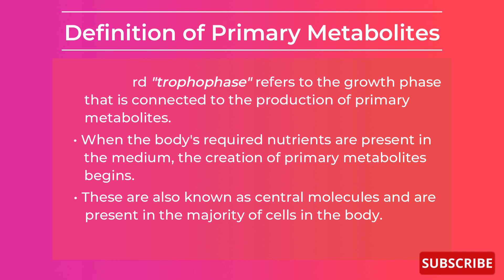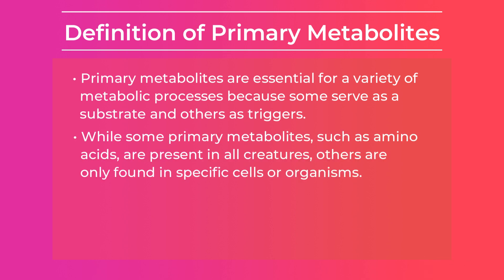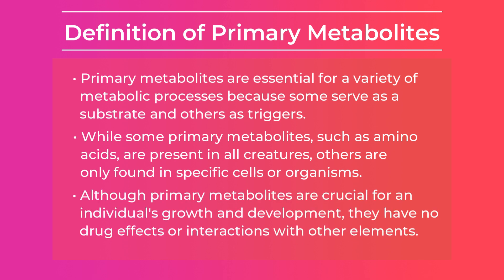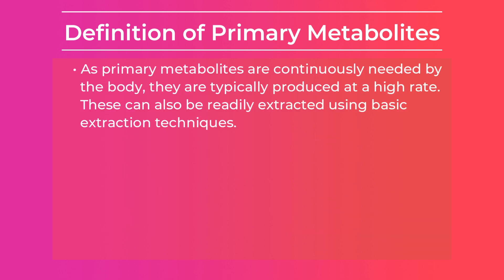Primary metabolites are also known as central molecules and are present in the majority of cells in the body. They are essential for a variety of metabolic processes because some serve as a substrate and others as triggers. While some primary metabolites such as amino acids are present in all creatures, others are only found in specific cells or organisms. Although crucial for growth and development, they have no drug effects or interaction with other elements, and are typically produced at a high rate and can be extracted using basic extraction techniques.